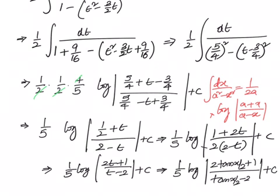So that is our answer. One point we have to understand is that whenever we have problems like this, we can solve them in more than one method. Instead of converting to the standard form of integral of 1 by a square minus x square, we can use splitting the middle terms, then convert them into partial fractions, find the A and B values, then integrate. You may not get exactly the same answer, but the constant terms and the negative ones which are part of the logarithm can be simplified and added up to the constant term. So the final answer will be 1 by 5 log of 2 tan x by 2 plus 1 divided by tan x by 2 minus 2, plus c.